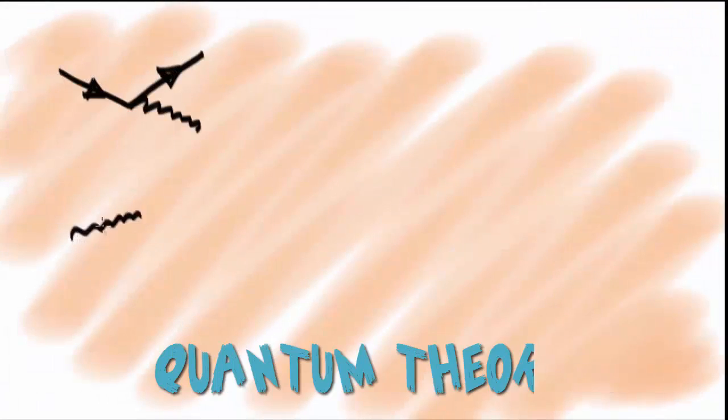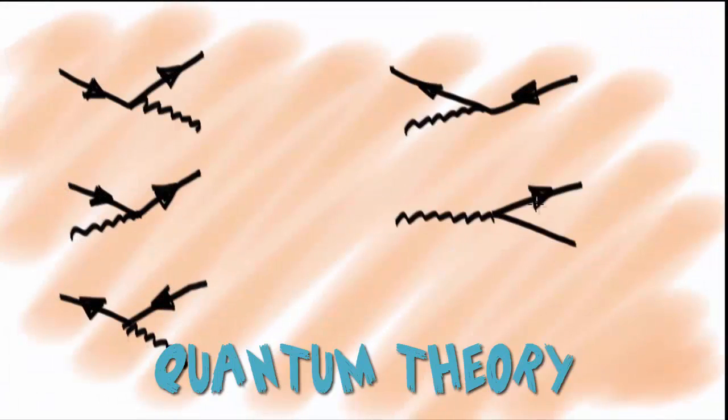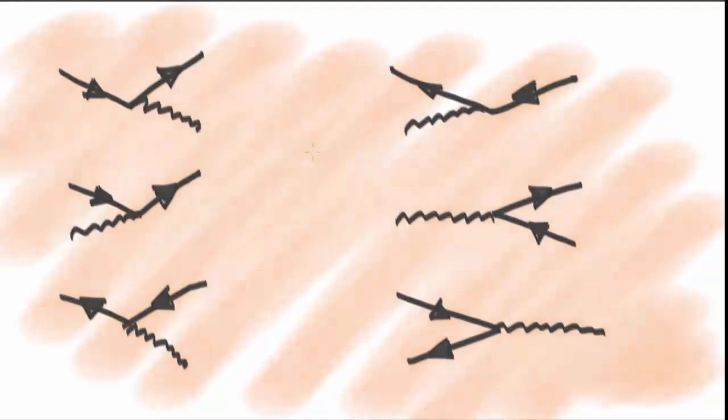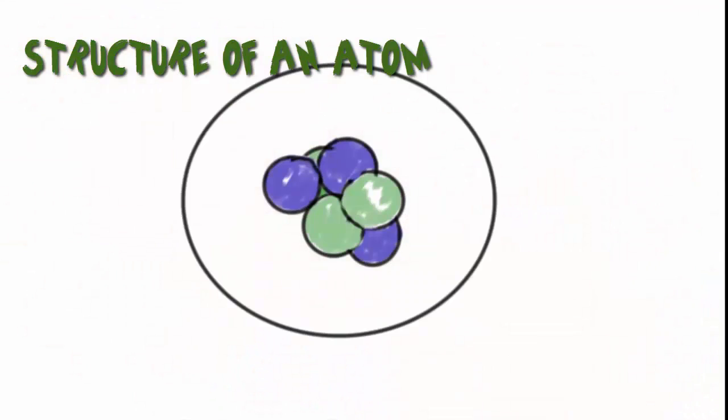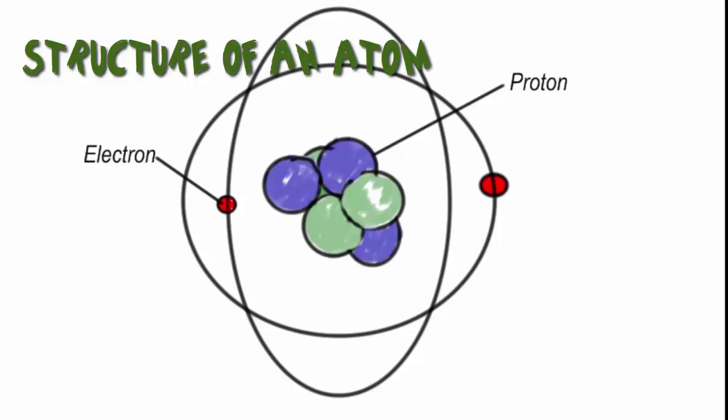The second theory, quantum theory, which is the theory of the microcosmic, describes very small things. It explains the nature and behavior of all things on an atomic and subatomic level.